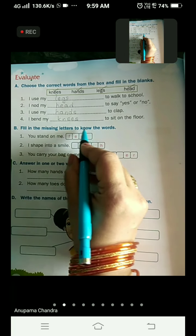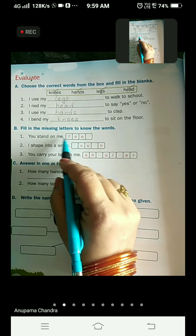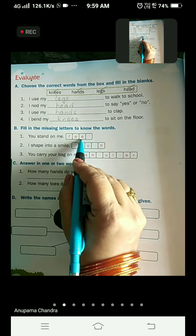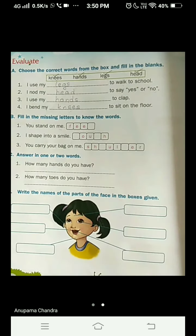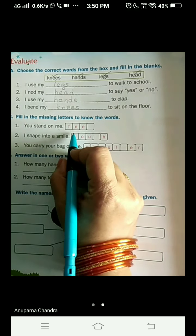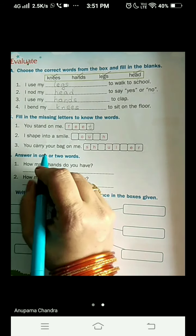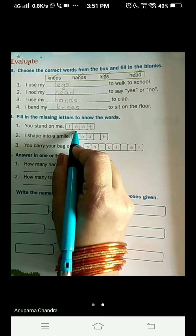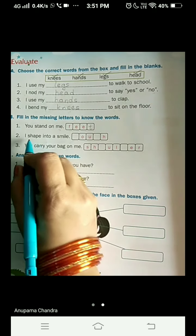Now come to the next question. Fill in the missing letters to know the words. You stand on me, four letter word is there and three are given. We have to write the fourth one. So the answer is F E E T feet. You stand on me, the answer is feet.